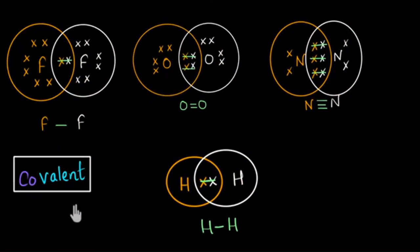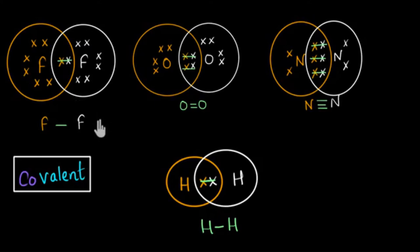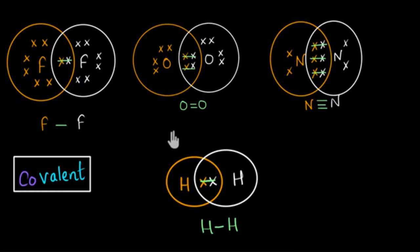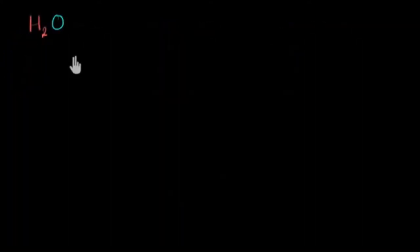In the video on covalent bonds, we saw how atoms can share electrons, form covalent bonds, and stick together. Now in this video, let's look at some more and different examples of how atoms of different elements like hydrogen and oxygen can form covalent bonds and stick together. We will also see how to draw the electron dot structure of these molecules, with the example of water.